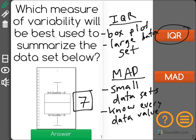And box plots generally represent larger data sets. So the IQR makes more sense in this case.